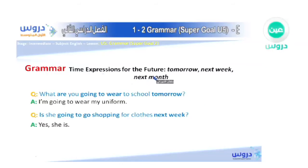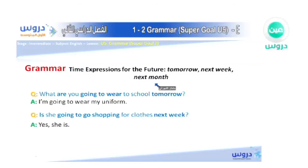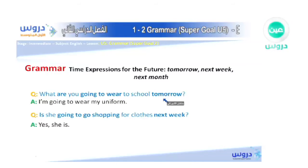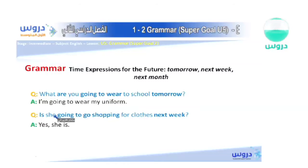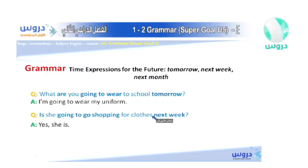Now let's talk about time expressions for the future: tomorrow, next week, next month. For example: What are you going to wear to school tomorrow? — 'Tomorrow' refers to something in the future. Answer: I'm going to wear my uniform. Is she going to go shopping for clothes next week? Yes, she is — 'next week' is also future.